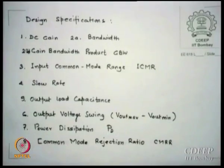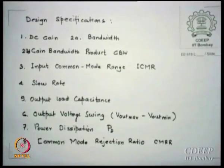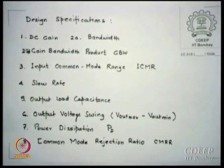We want to design and identify at least the minimum necessary parameters. For example, many times CMRR is not specified because one believes that for the gains and bands we talk about, CMRR will match requirements, but if not, you evaluate and figure it out.